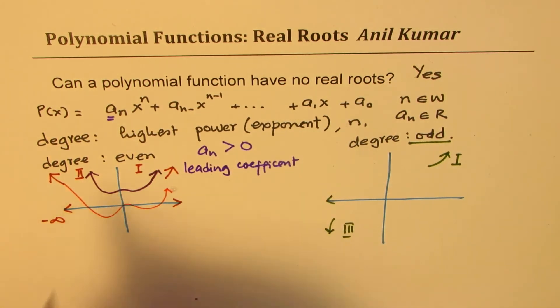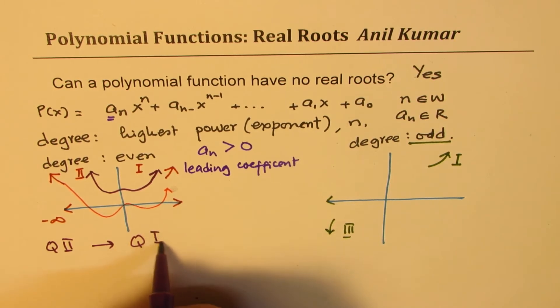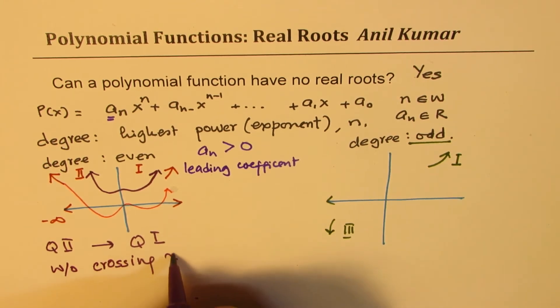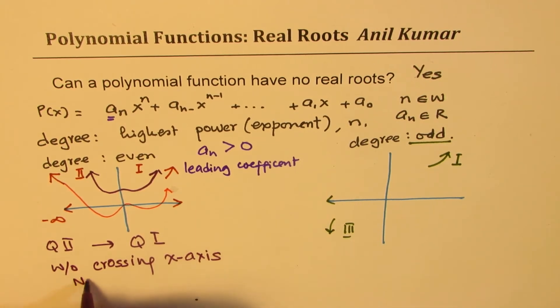So in this case, if you move from quadrant two to quadrant one, you can go without crossing x-axis. And that means no real roots.